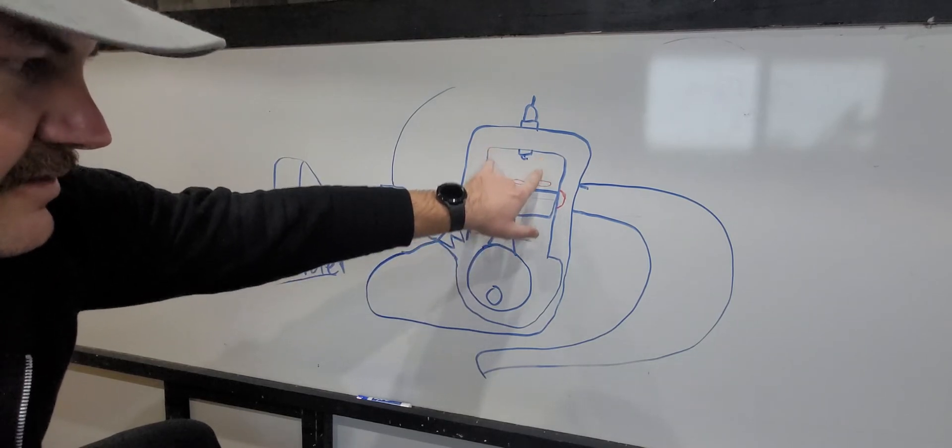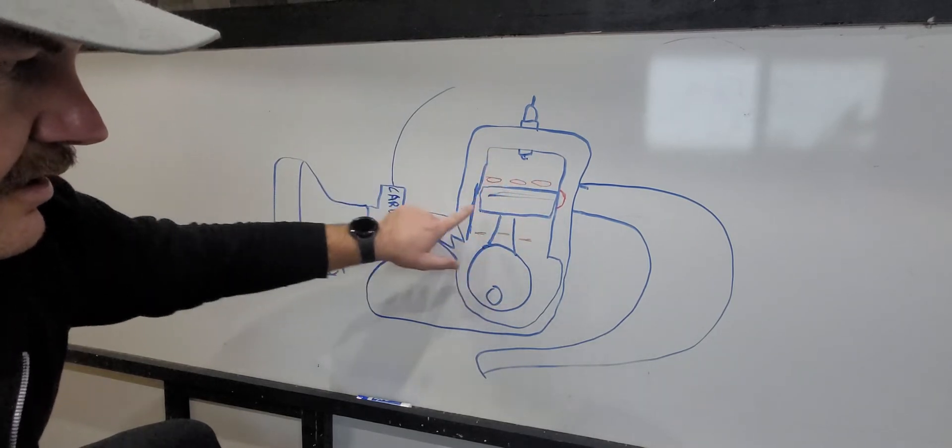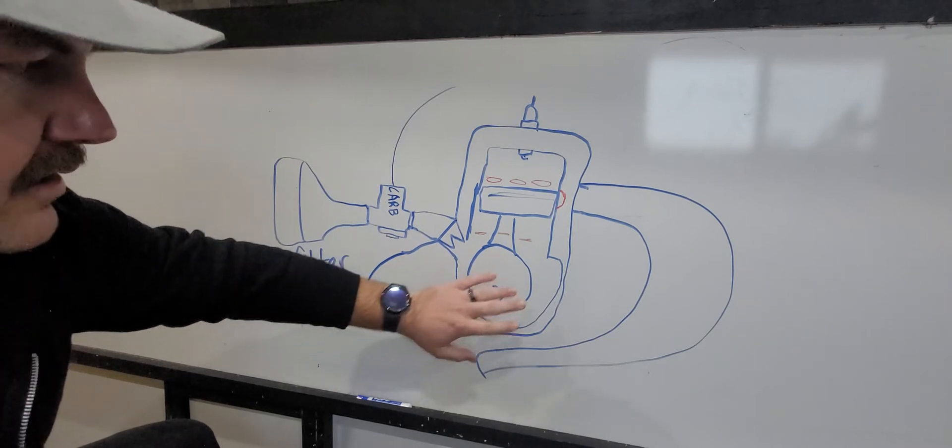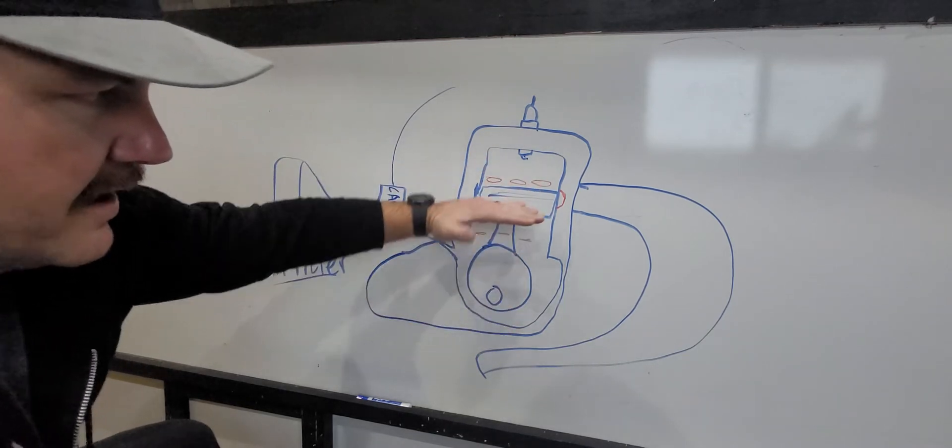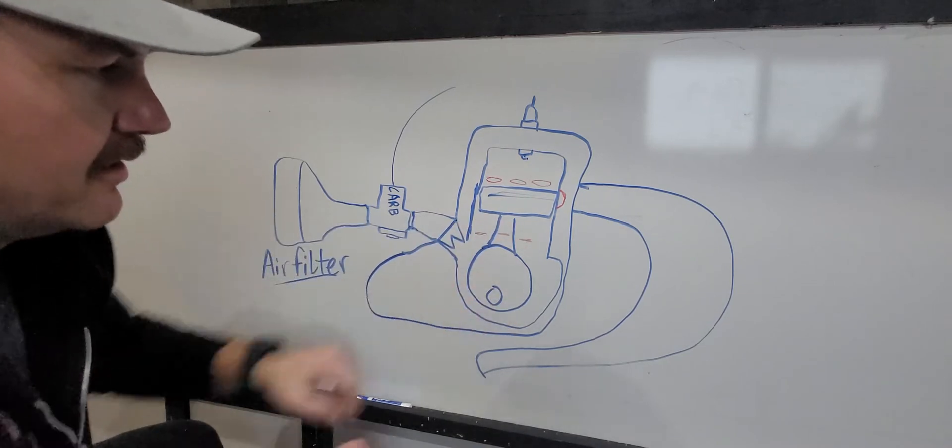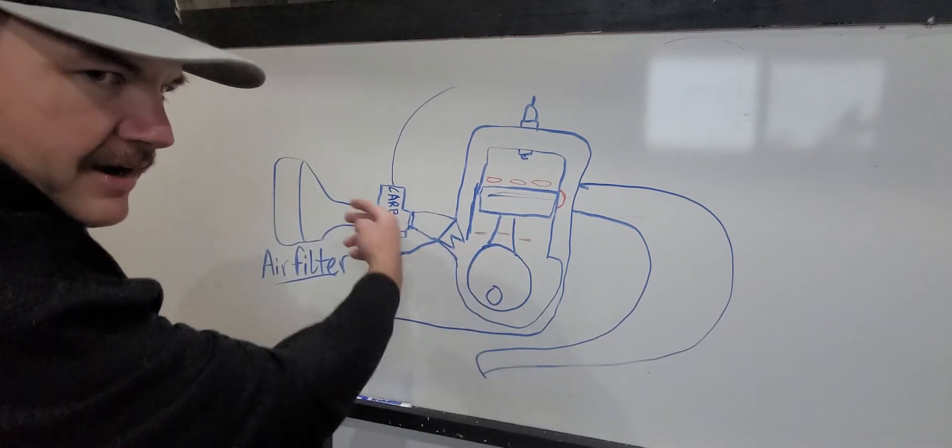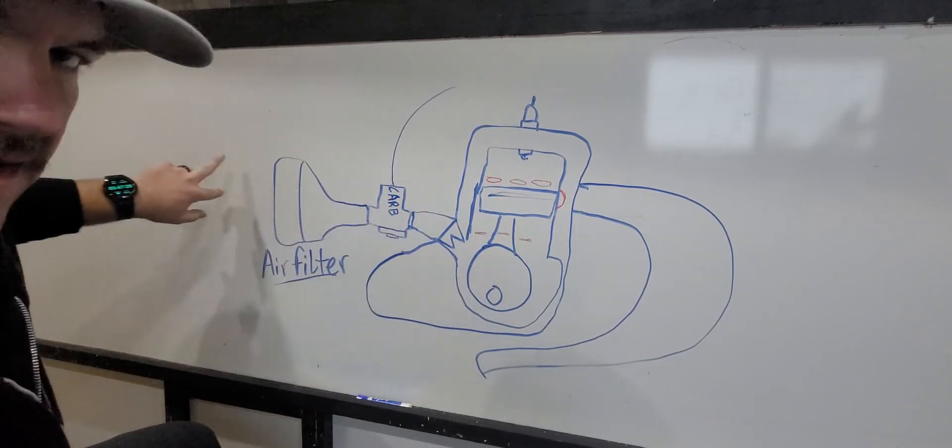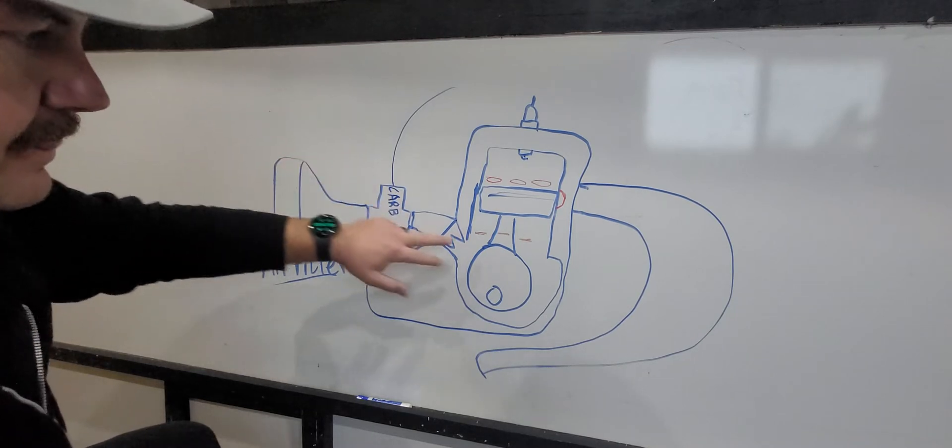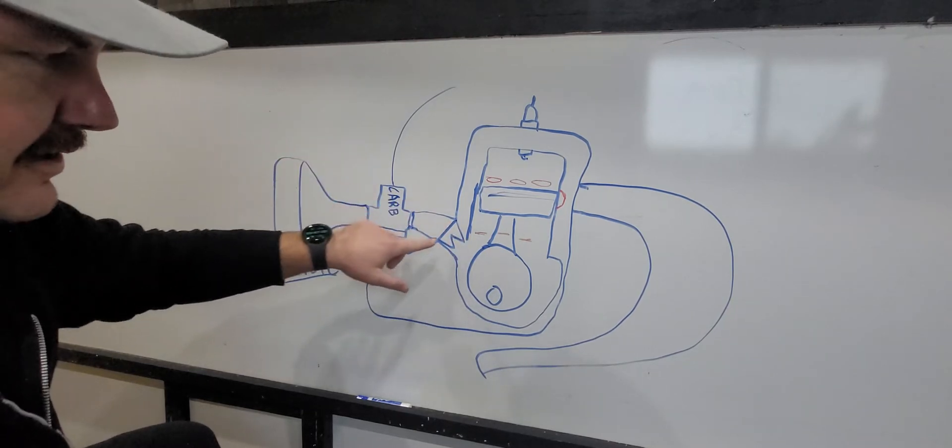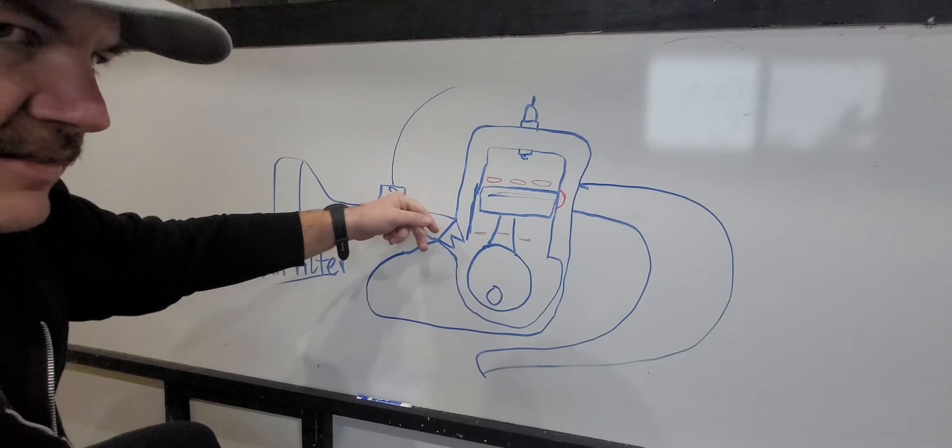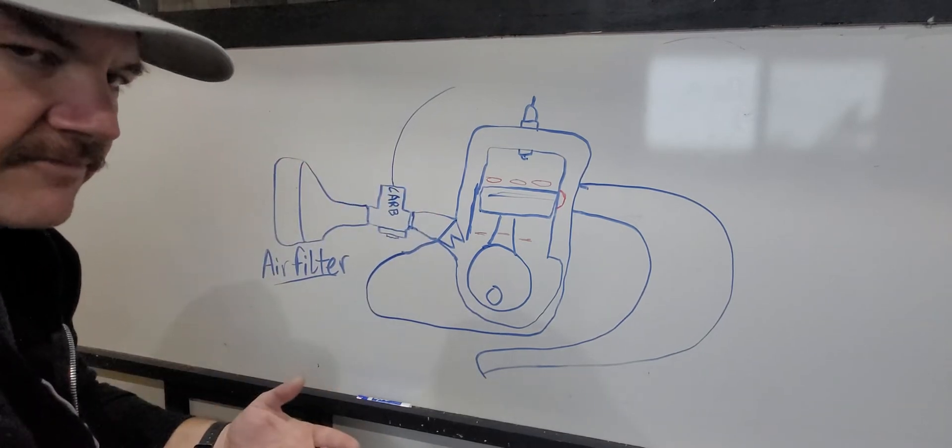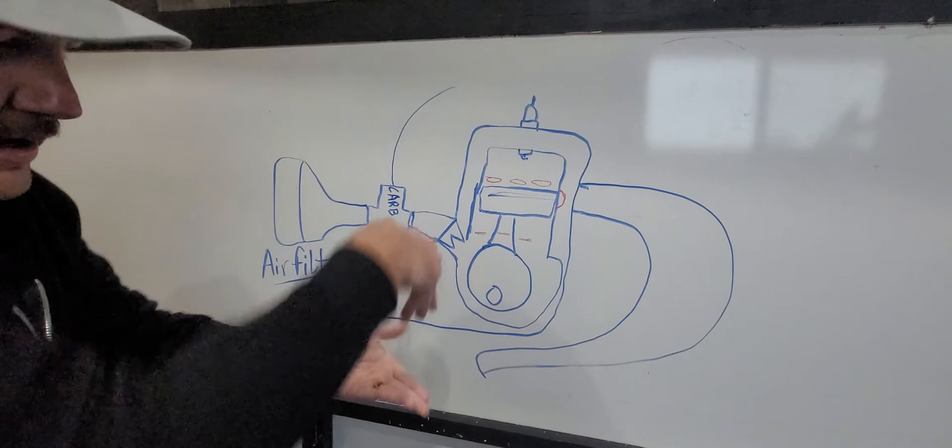As soon as this fires and starts going down, everything you just sucked in here is now going to be compressed this way as the piston comes down. So to keep it from backfiring and blowing out your air filter and everything, what this is is essentially a check valve. It's usually made of fiberglass or carbon fiber reeds.